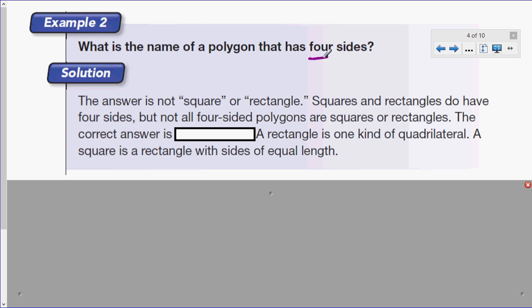It says the answer is not square or rectangle. So if that's what you were initially thinking because it says four sides, think again. Actually, think back to the chart we just looked at. Squares and rectangles do have four sides, but not all four-sided polygons are squares or rectangles. The correct answer is, what do you think it is? Hopefully you are thinking quadrilateral, which was the name in the chart. A quadrilateral is the correct answer. A rectangle is one kind of quadrilateral. A square is a rectangle with sides of equal length. But the most general term that fits any four-sided polygon is called a quadrilateral.